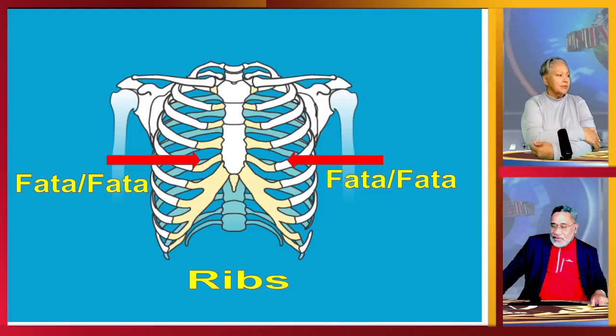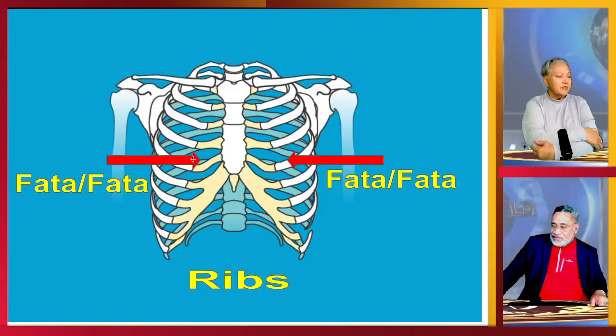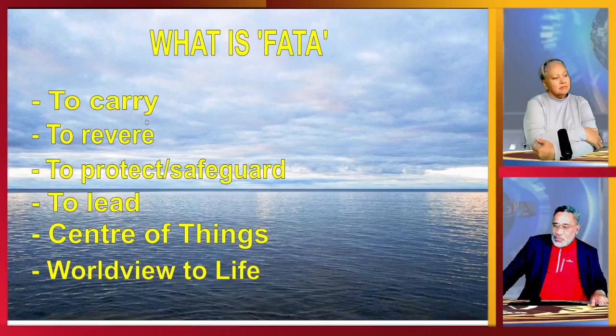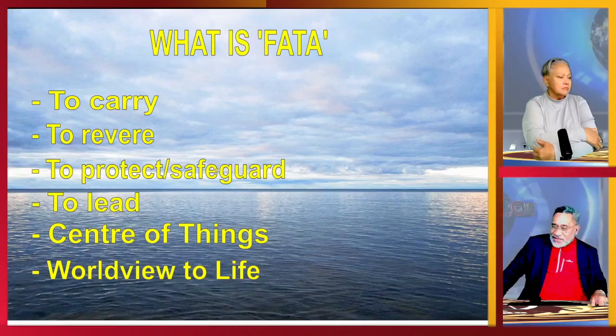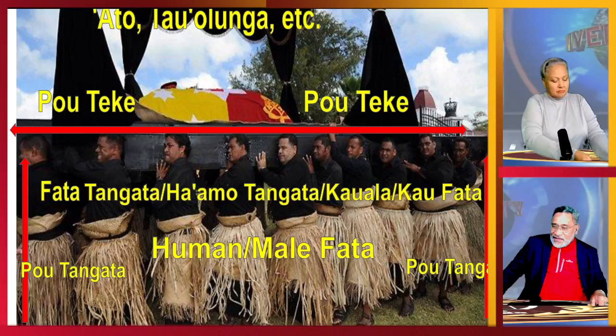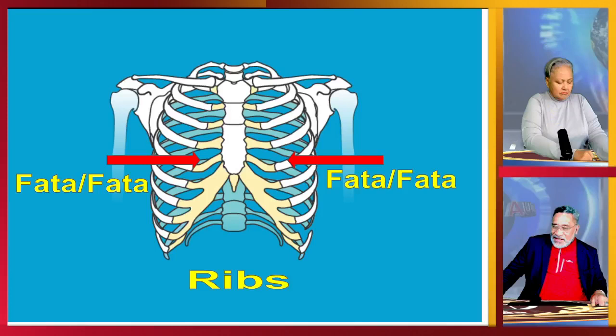We also have ribs — in our case that is fata, we call it fata. The ribs of whatever — human — fata fata. As we go through, we can see it fits with these meanings: to carry, to revere, to protect, to safeguard. In this case, it is to protect and safeguard the body of the king, the corpus. Fata to protect — it fits with the senses I have shown.